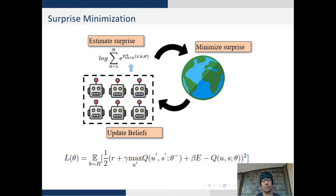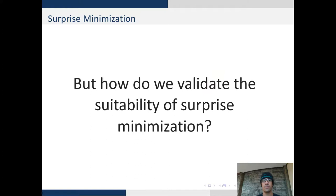Our final scheme can be visualized as follows. We estimate surprise using an energy-based function. We minimize surprise in the environment by acting and avoiding surprising states and then we update our beliefs using the cost function L-theta.